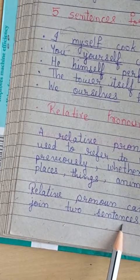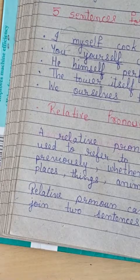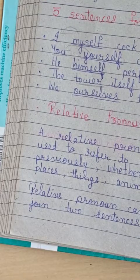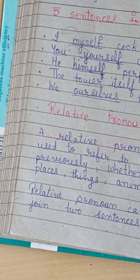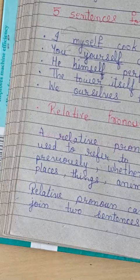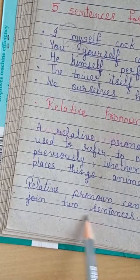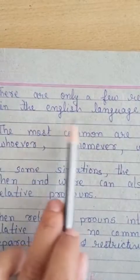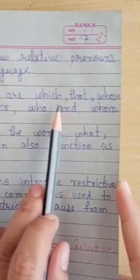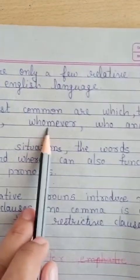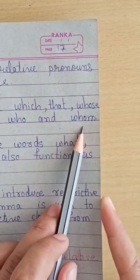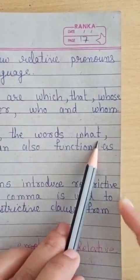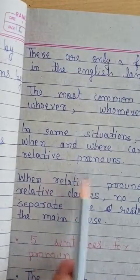Relative pronouns can be used to join two sentences. They can also be considered as subordinating conjunctions — a conjunction is a word which joins two sentences. There are only a few relative pronouns in English. The most common are: which, that, whose, whoever, whomever, who, and whom. In some situations, the words what, when, and where can also function as relative pronouns.